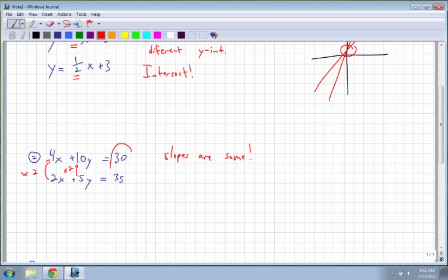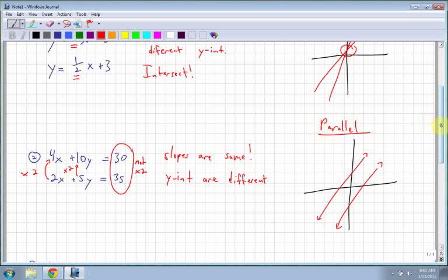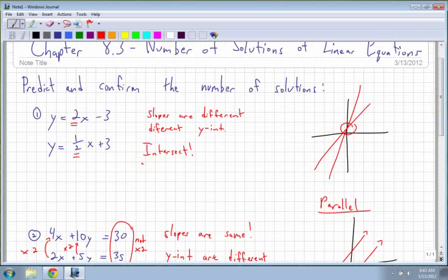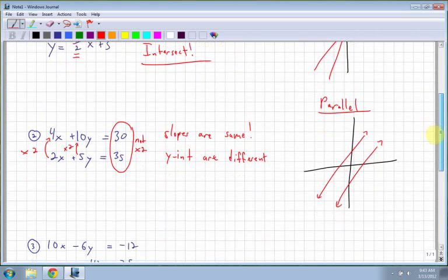But if I look at the end number, not multiplied by 2, therefore the y-intercepts are different. And if the slopes are the same but the y-intercepts are different, you're going to get lines that look like this, which are parallel. So we have parallel lines. The first ones were intersecting lines, and the second ones are parallel.